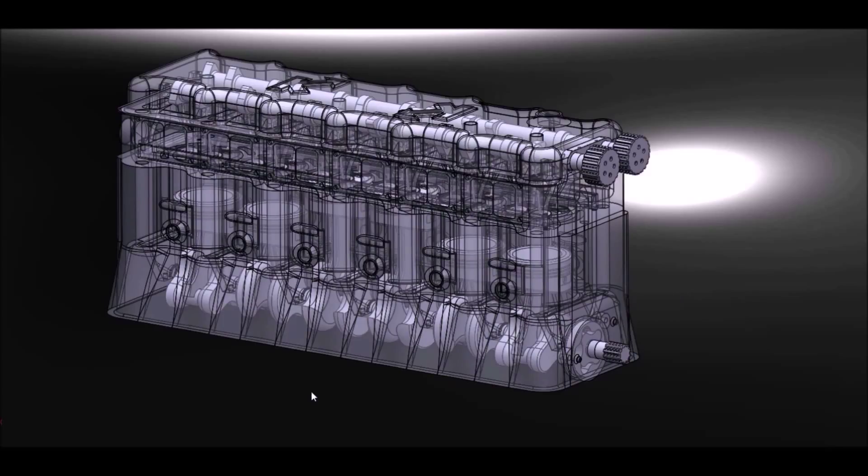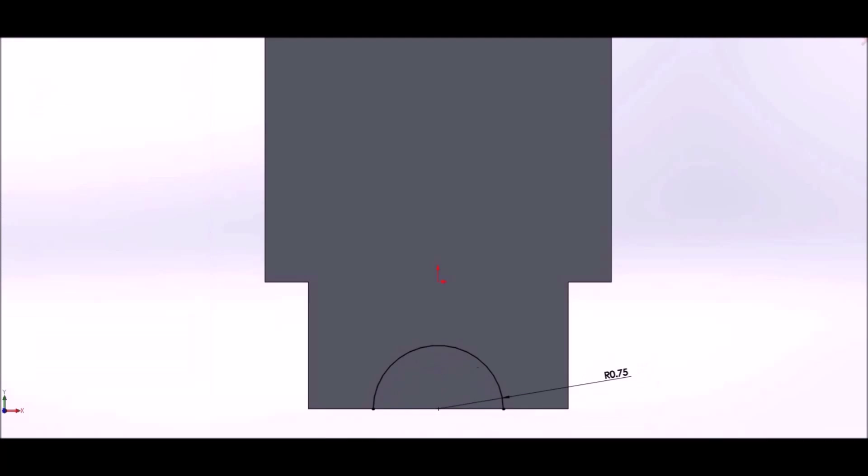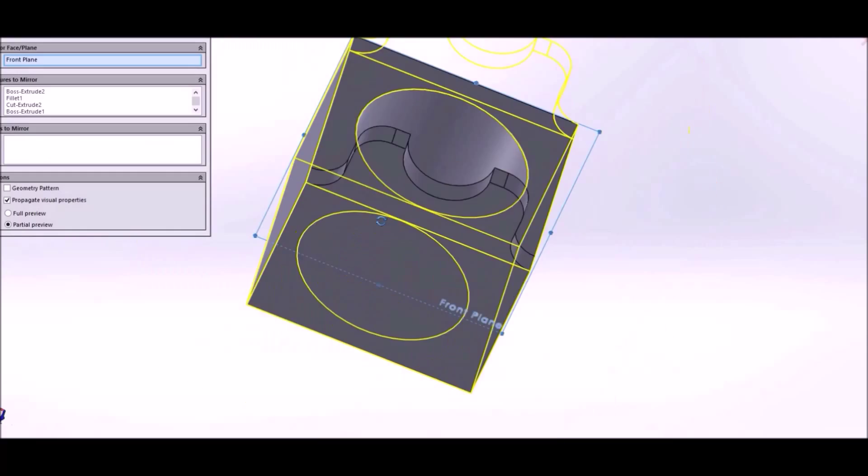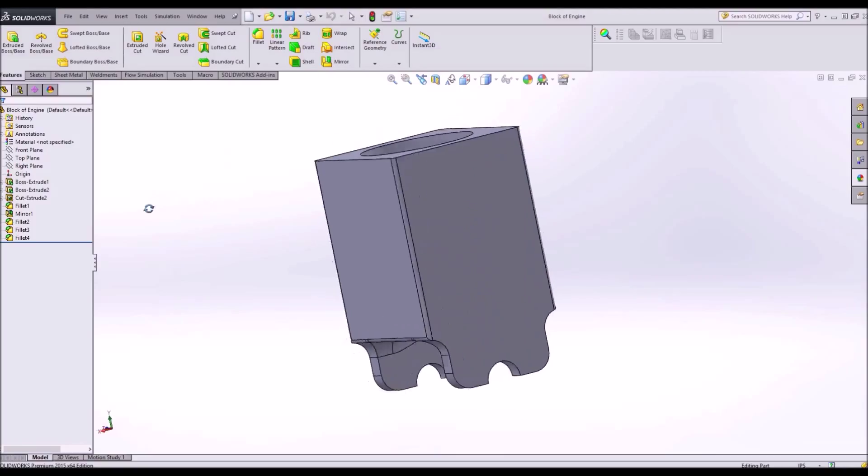I'm going to start off by making an engine block, which is the foundation of an engine. It provides placement for all of the internal and moving parts. I'll model that very quickly. Well, this is one of the most simple kinds of engine block that you can have.